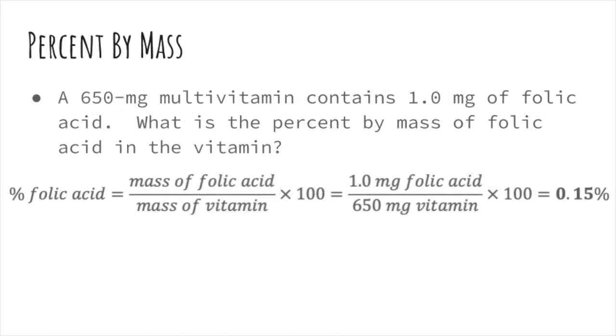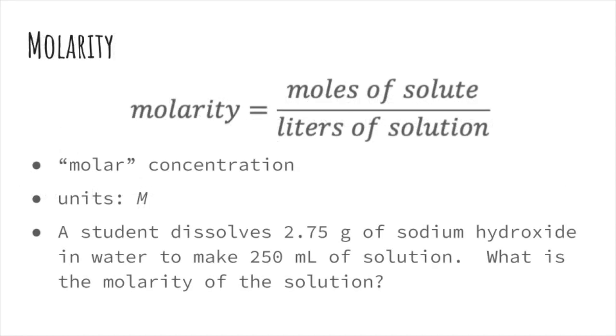The mass of folic acid is 1.0 milligrams, so we'll divide that by the mass of the whole mixture, the vitamin's mass of 650 milligrams. This gives us a percentage of folic acid of about 0.15 percent.